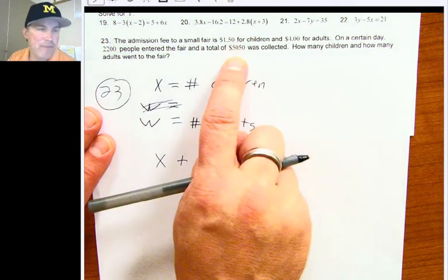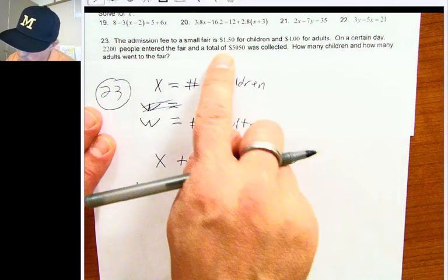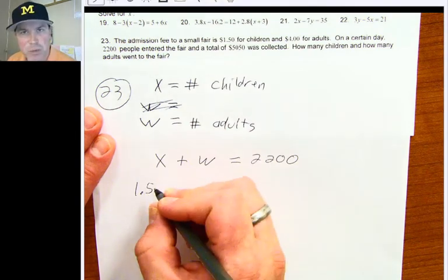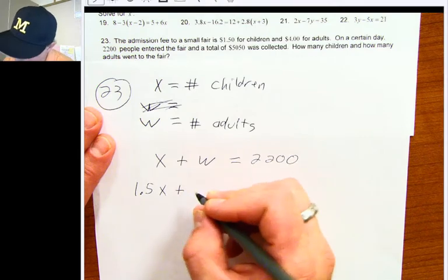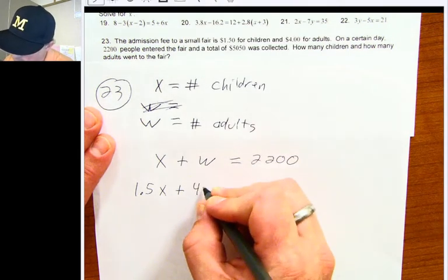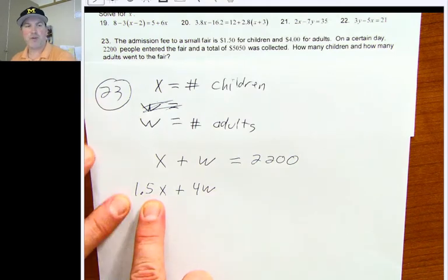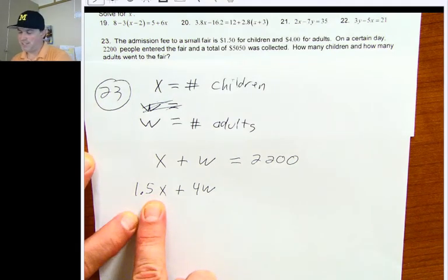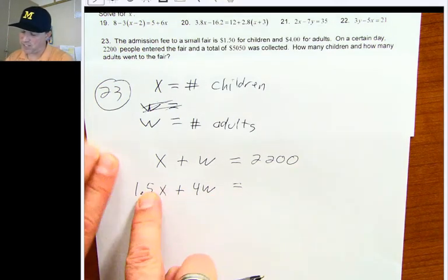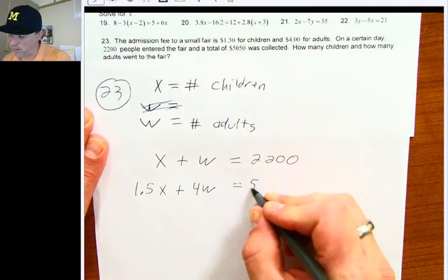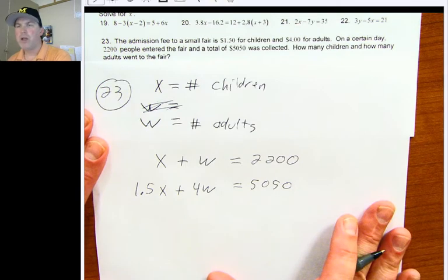I'm going to have x be the number of children. And my second variable, I will pick w, the number of adults. I know that 2,200 people entered the fair. So if I add the number of children plus the number of adults, that should give me the total number of people at the fair, which would be 2,200. A total of $5,050. I know that if I multiply $1.50 times the number of children plus $4 times the number of adult tickets, this will tell me how much money I collected. And your children tickets plus your adult tickets is supposed to add up to $5,050.